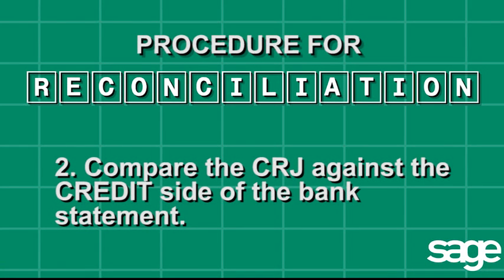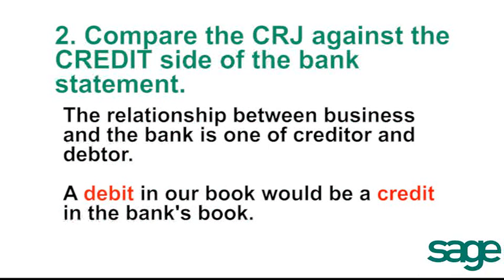Our second step is to compare the cash receipt journal against the credit side of the bank statement. Remember that the relationship between the business and the bank is one of creditor and debtor — a debit in our books would be a credit in the bank's books.